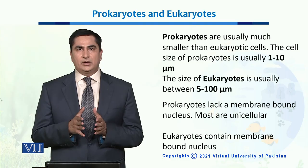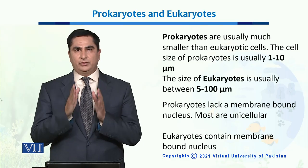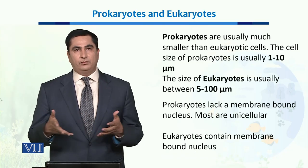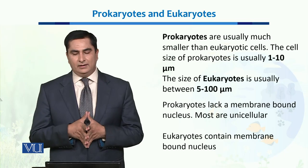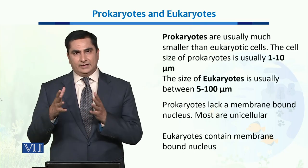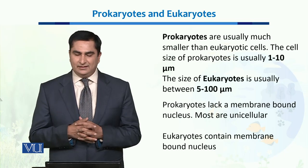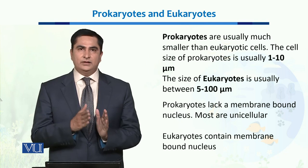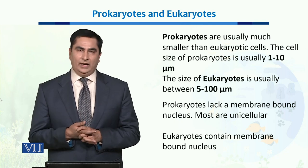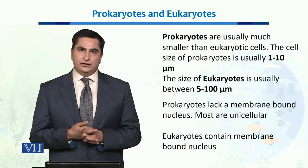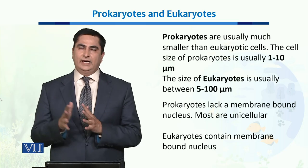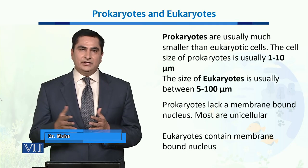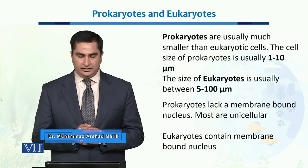There are remarkable differences between prokaryotes and eukaryotes. Prokaryotes are very small as compared to eukaryotic cells. Their size is usually from 1 to 10 micrometers, while the size of eukaryotes is much larger — it can reach up to 100 micrometers.